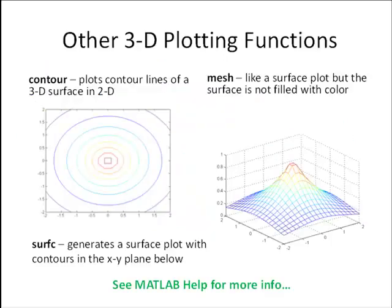Here's some other 3D plotting functions that we're not going to talk about in detail. The contour plot plots contour lines of a 3D surface in 2D. So think about, if you've ever looked at a topo map, that uses contour lines. A topographic map is an example, thinking of contour lines. You can think of this as a topographic map of the function. Surf C generates a surface plot with contours in the XY plane below. And I'm going to let you experiment with that one in the homework. And a mesh plot is very similar to a surface plot, but the surface is not filled with color. Basically, the color variation just happens on the lines. So we have the grid lines only.